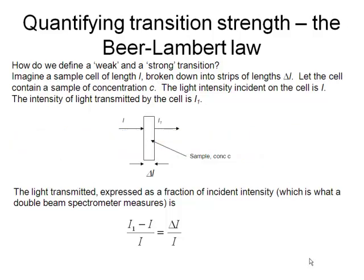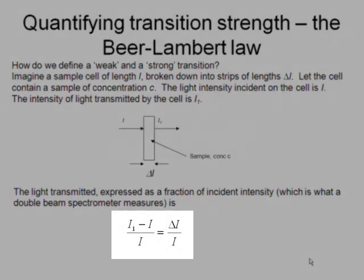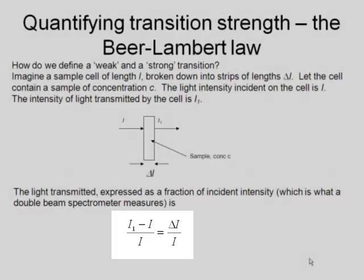The amount of light transmitted is expressed as a fraction of the incident intensity. So we do I1 minus I, transmitted intensity minus the incident intensity, and then we divide it by the incident intensity. And we call that delta I over I. That's the fraction of light transmitted by that thin strip of length delta L.